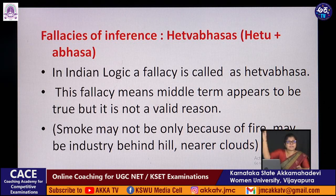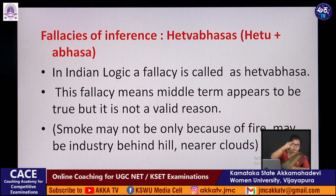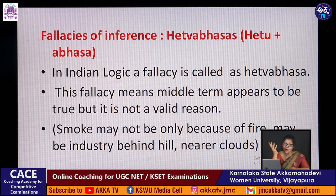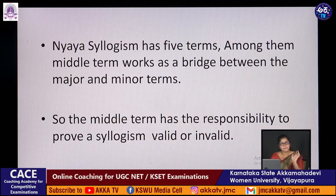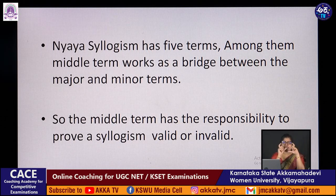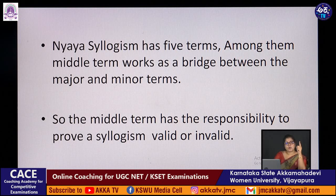For instance, seeing smoke on a hill and concluding there is fire could be wrong if the smoke is from a factory chimney. Also, clouds do not contain fire — so concluding fire from clouds would be wrong. These are hetvabhashas. The middle term is very important in Nyaya syllogism: it has the responsibility to prove a syllogism valid or invalid.